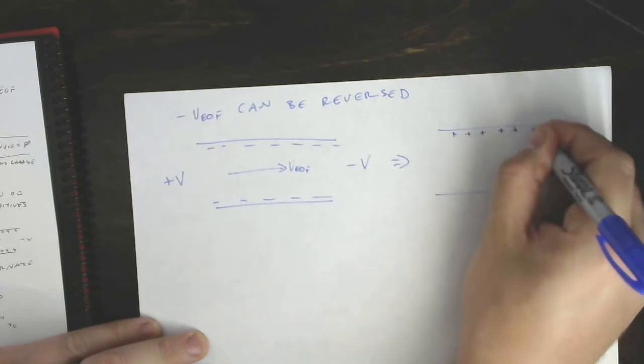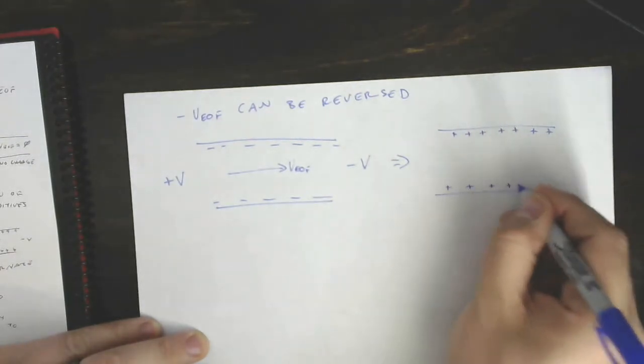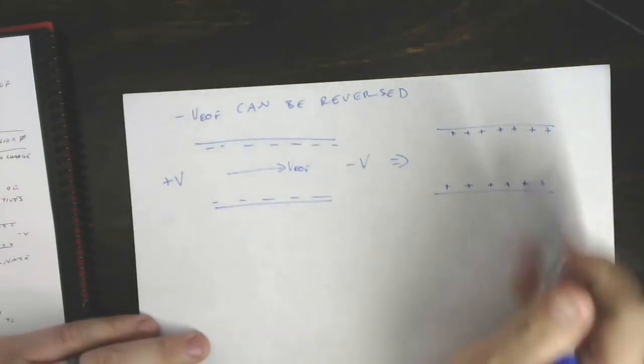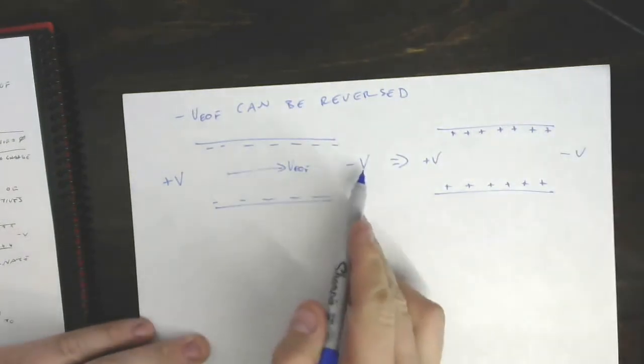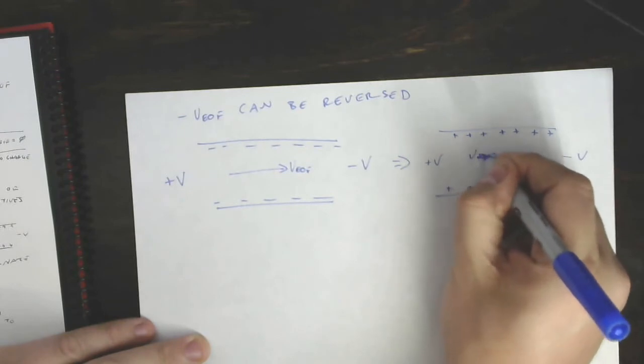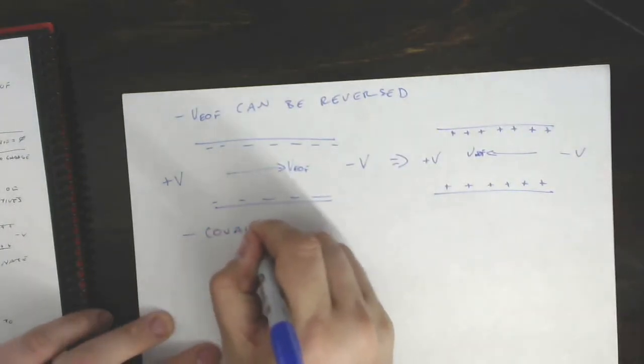But if we can modify that wall to not carry a negative charge but instead to carry a positive charge, so for example we could use a chlorosilane reagent that puts an amine on that wall, and now we'd be able to get a cationic wall. Well in that case, with the exact same potential application, we would see the EOF go in the opposite direction. So that can be done by covalent modification.